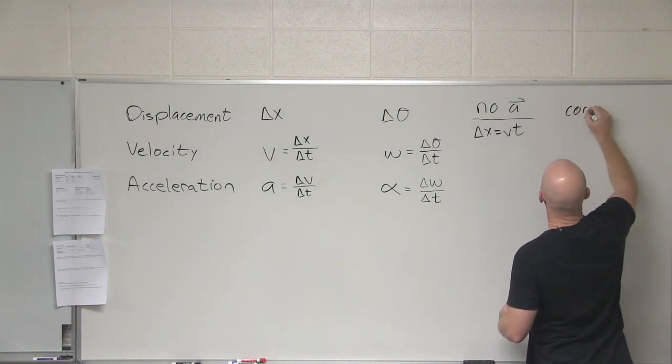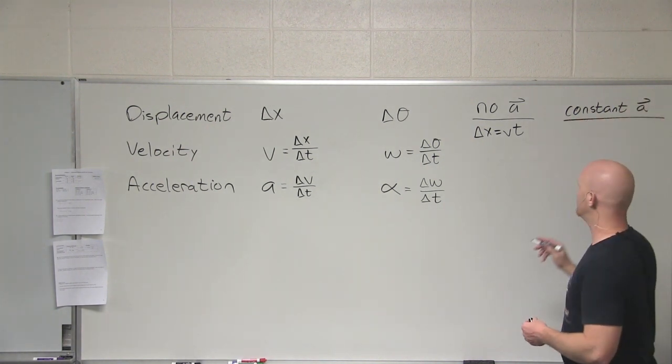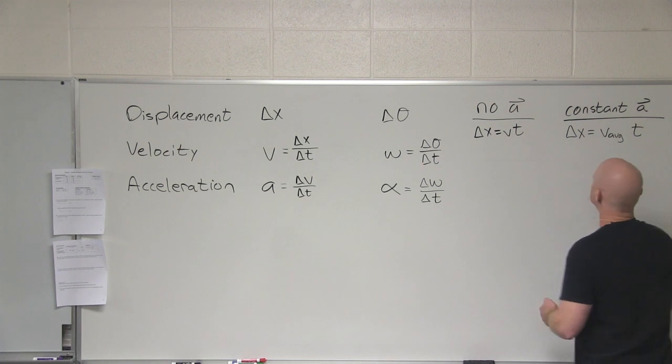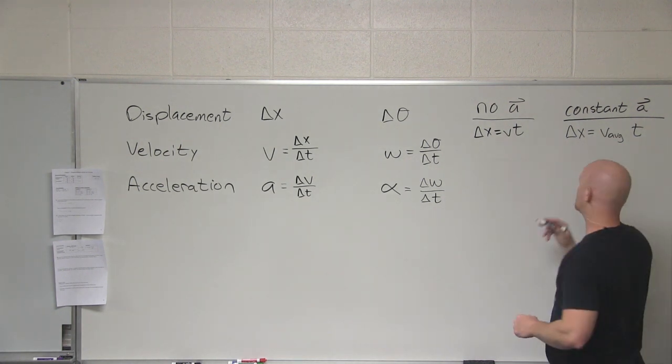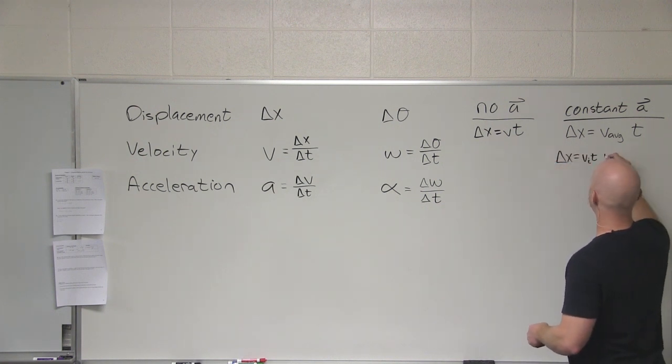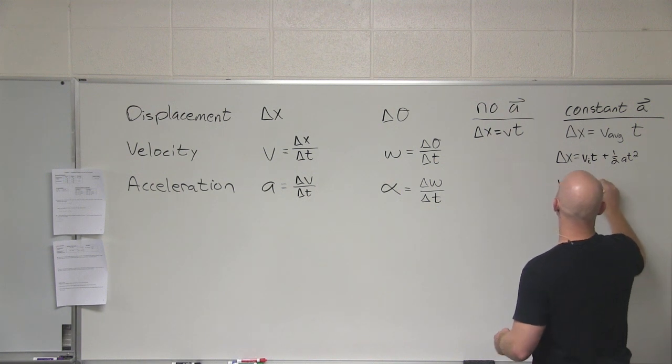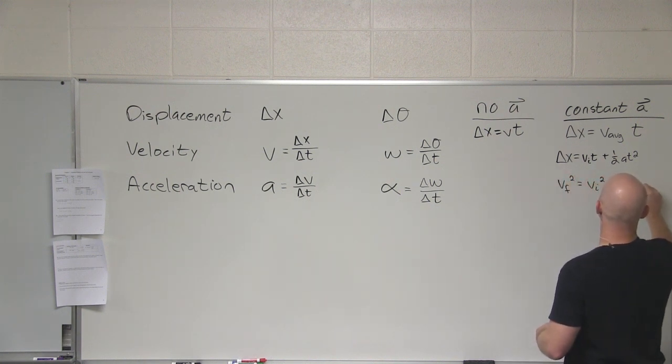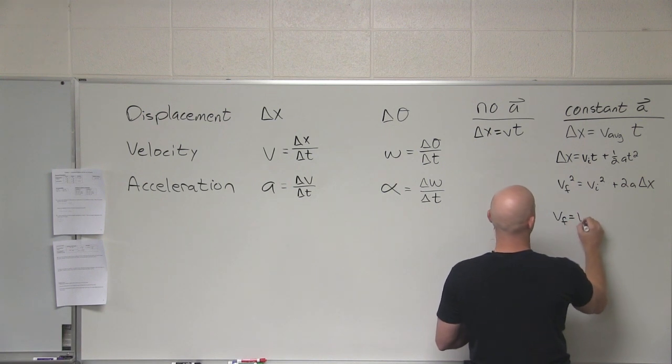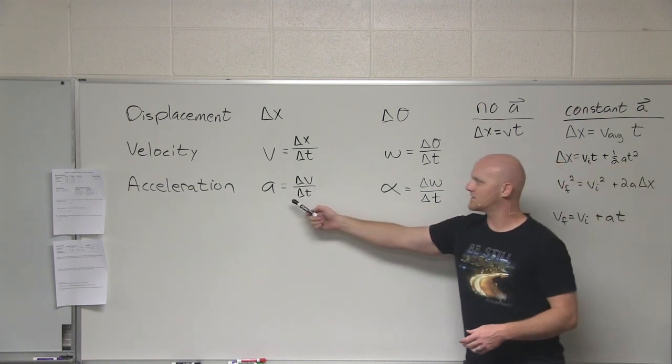Whereas if you have constant or uniform acceleration, we had a few different equations. What was my favorite one? Yeah, v average t. That was my favorite. But typically I had you guys try these systematically. What was the next one? v initial t plus one half at squared. My least favorite one, v final squared equals v initial squared plus 2a delta x. And finally, I don't really even like this as an equation, but v final equals v initial plus at, which is really just a rearrangement of the definition of acceleration.